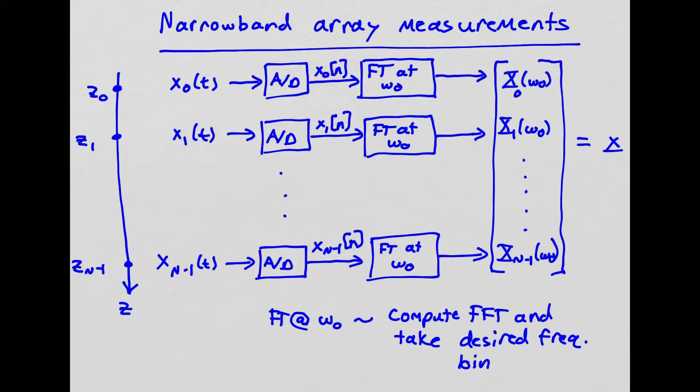And then to get our narrowband signal at some desired frequency omega 0, we simply take the Fourier transform and evaluate it at omega 0. We store that in x0 of omega 0. We can do that for each of these sensors, run each of them through an A to D converter and take the Fourier transform at our desired frequency. We stack them in a vector and that becomes the vector x. That's our narrowband measurement.